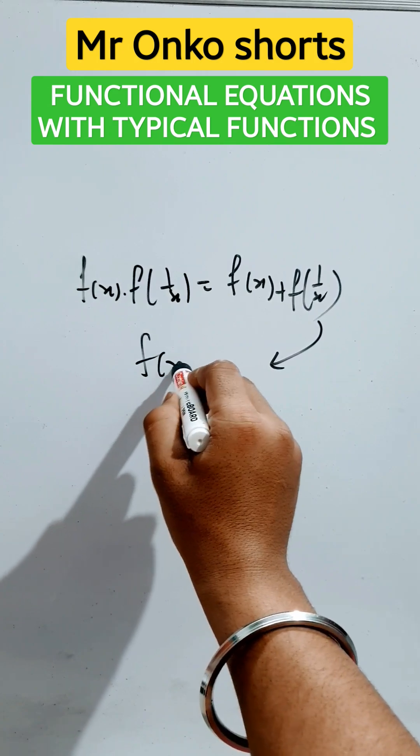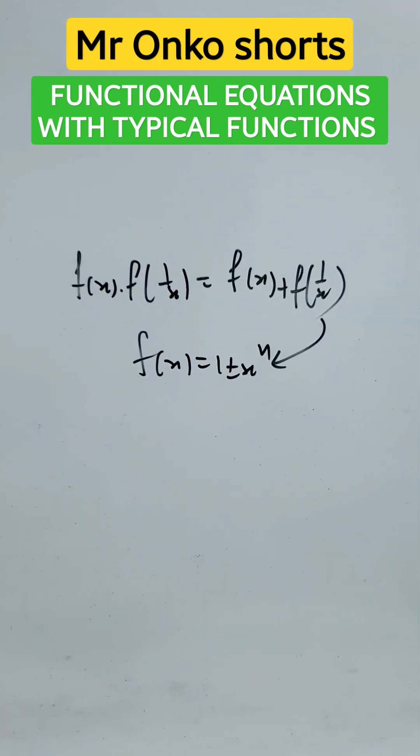This rule will be followed by the function f of x equals 1 plus minus x to the power n. That's it.